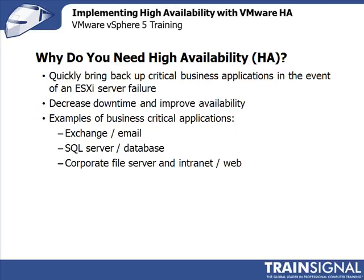You need high availability to quickly bring back critical business applications in the event that an ESXi host fails. We are now consolidating several different systems onto one system, so technically we've created higher points of failure. Without high availability, if you have a 10-to-1 consolidation ratio, you've consolidated 10 previously isolated systems onto one — increasing the likelihood of failure. In the event of a failure, you now have 10 systems down.